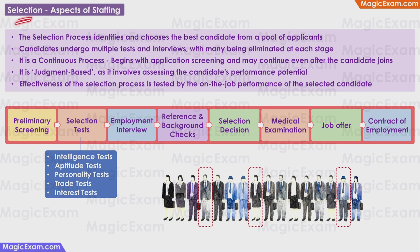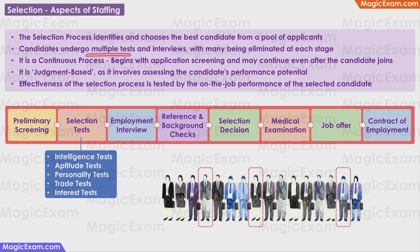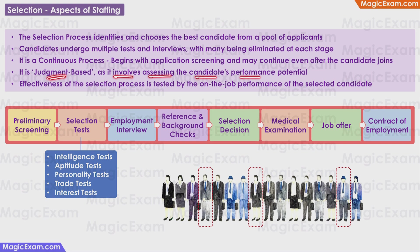Next, let us look at selection. The selection process identifies and chooses the best candidates from among the pool of applicants. Candidates may undergo multiple tests and interviews, with many being eliminated at each stage. Selection is a continuous process — it begins with application screening and may continue even after a candidate has joined the organization. It is judgment-based, because it involves assessing the candidate's performance potential — the candidate is selected based on how they may perform in the future — and the effectiveness of the selection process is validated by the on-the-job performance of the selected candidate.